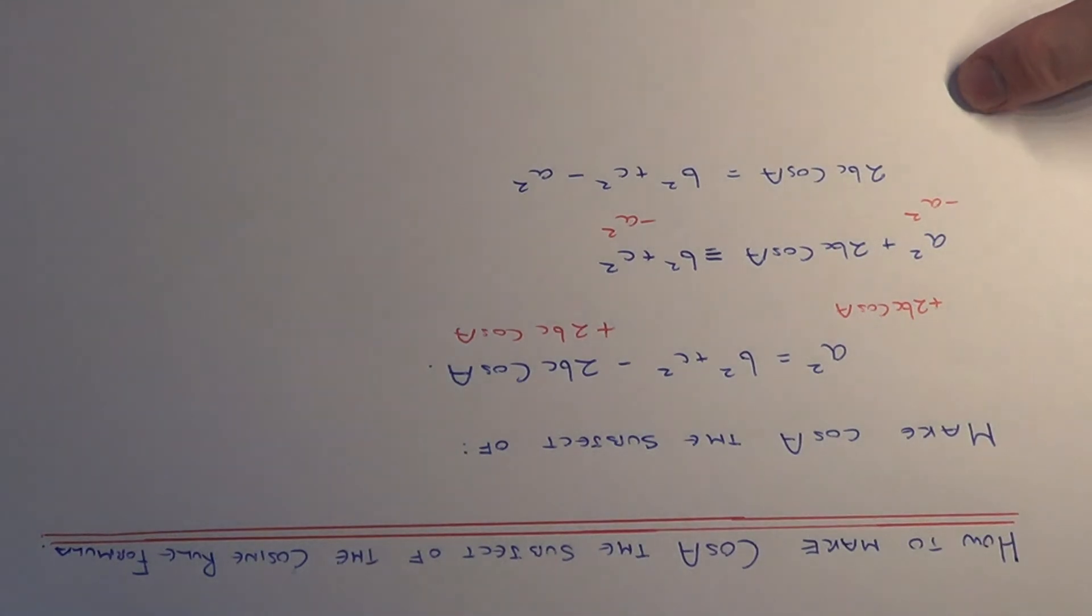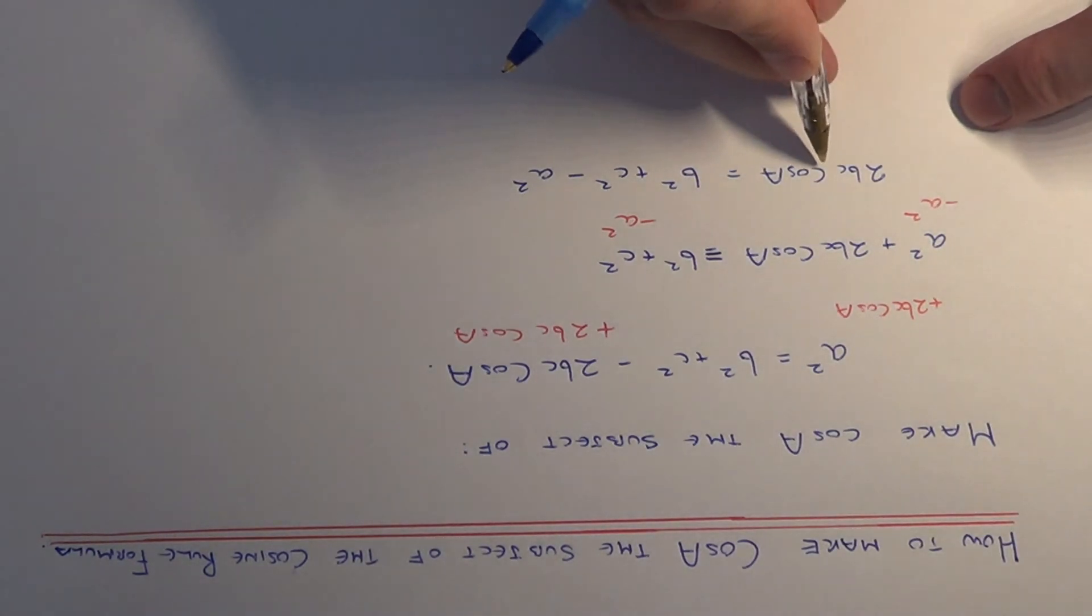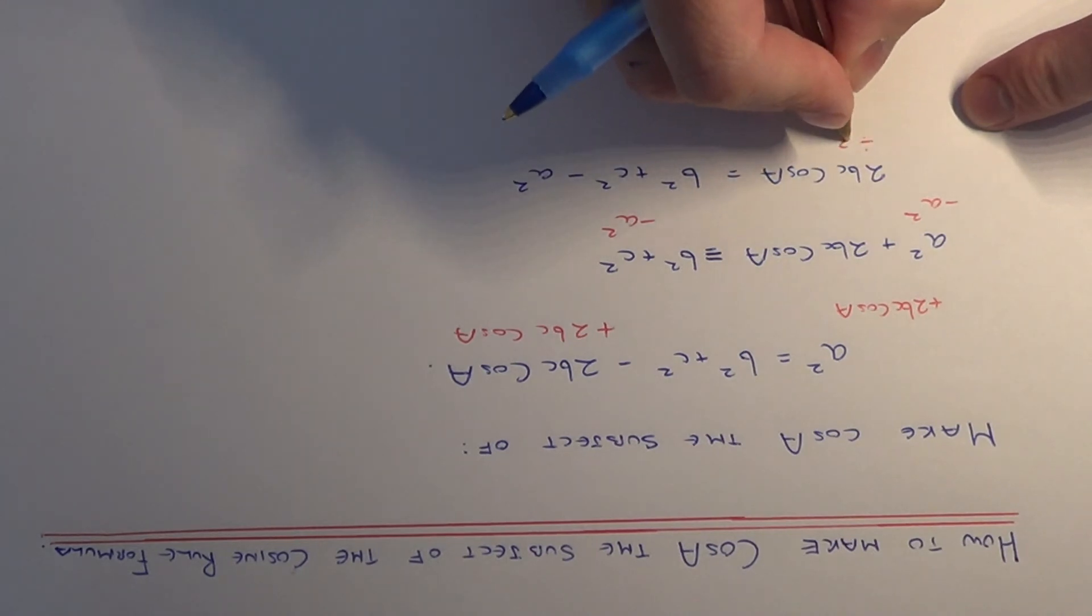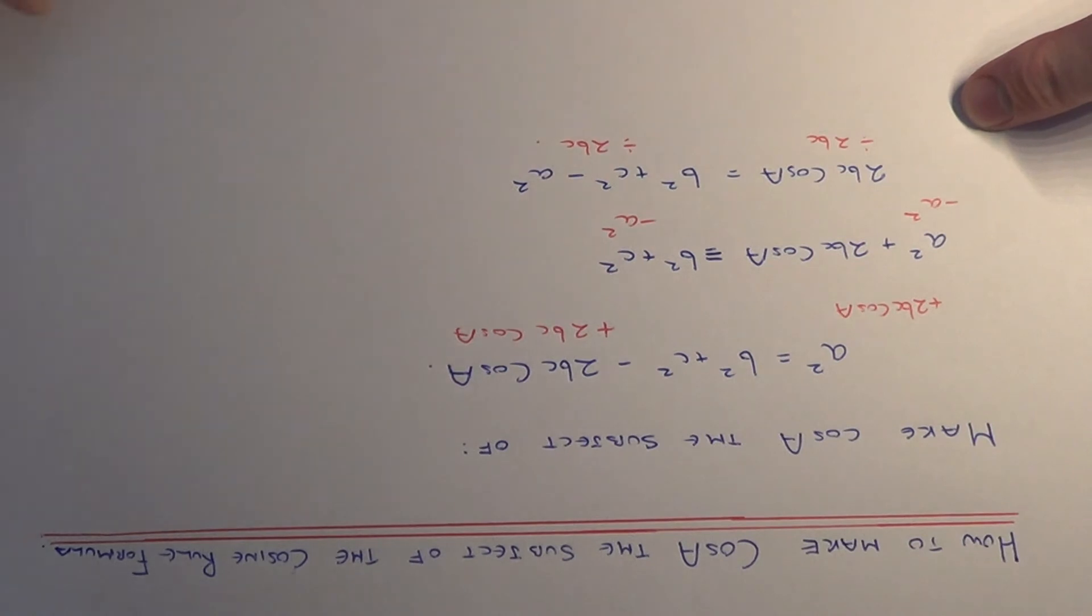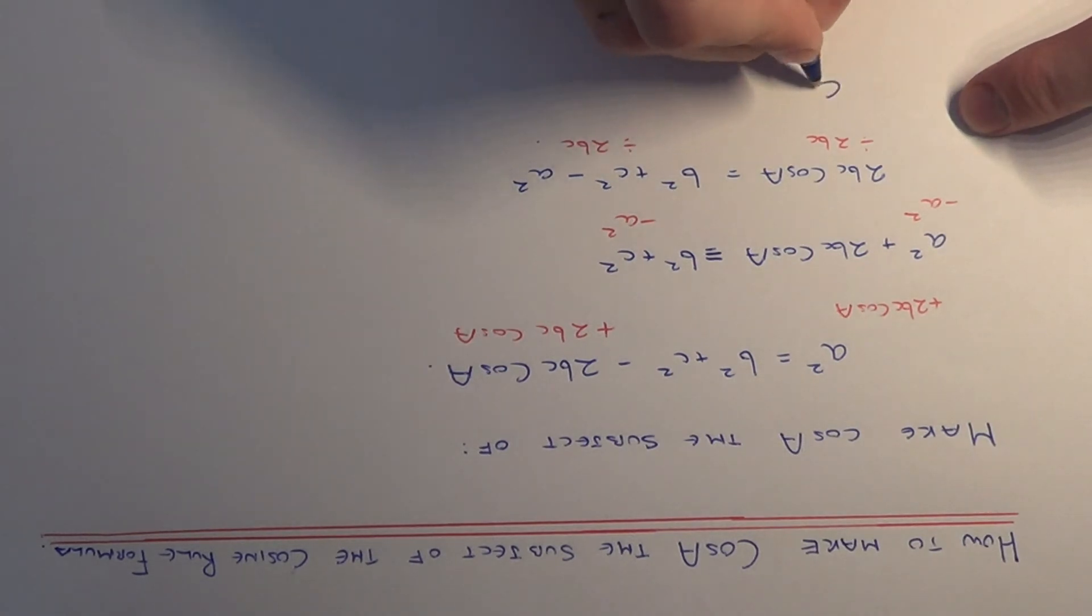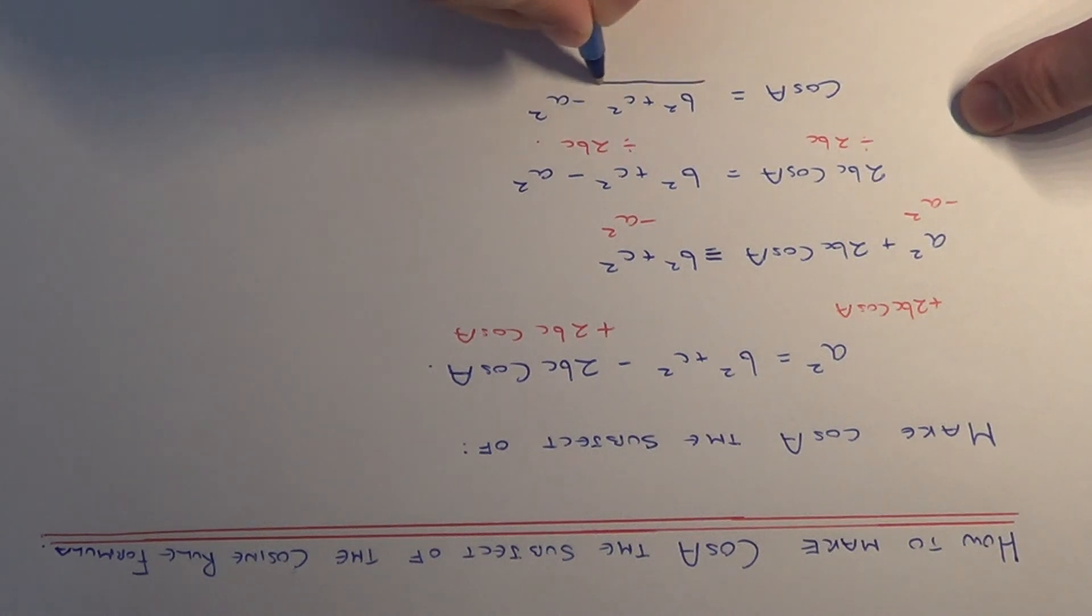We've just got one more thing to do now. Cos A has been multiplied by 2bc, so we just need to divide both sides by 2bc. This will give us a formula of cos A equals b squared plus c squared minus a squared all over 2bc.